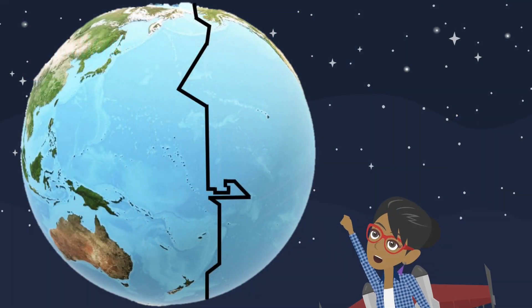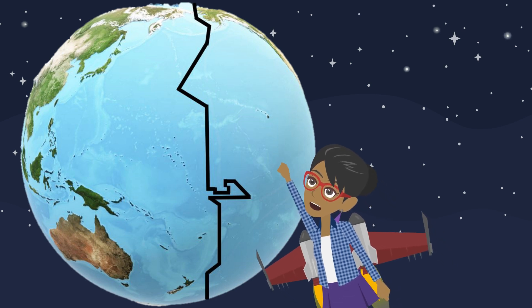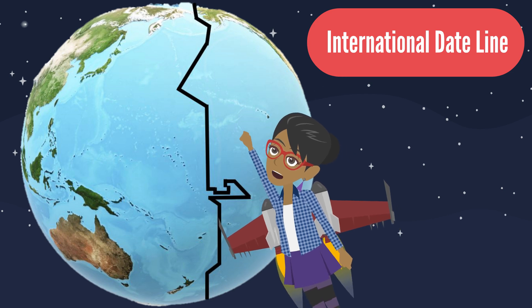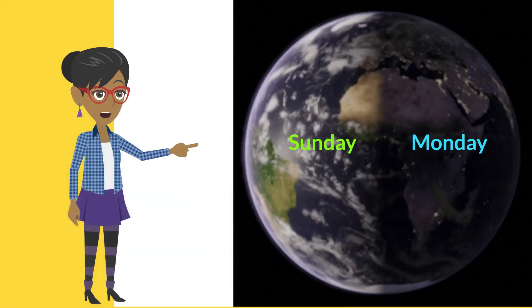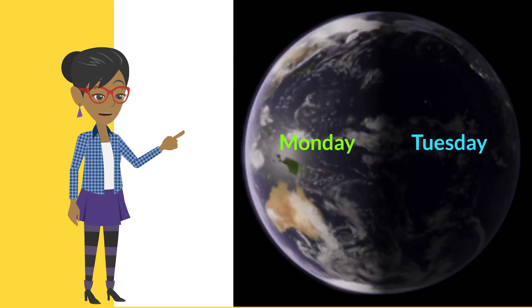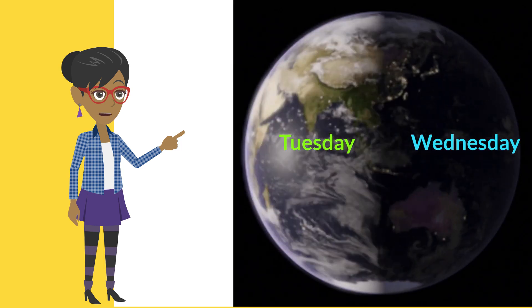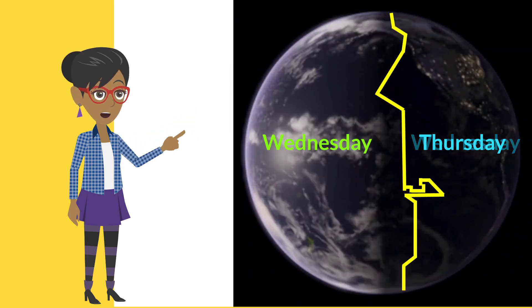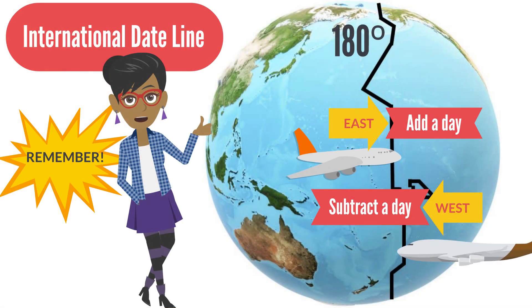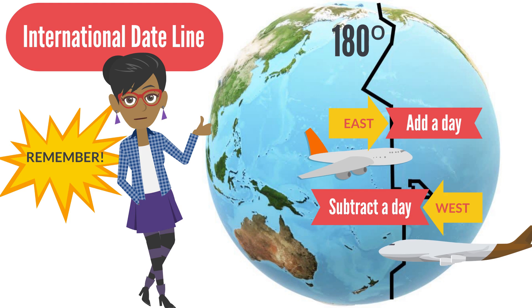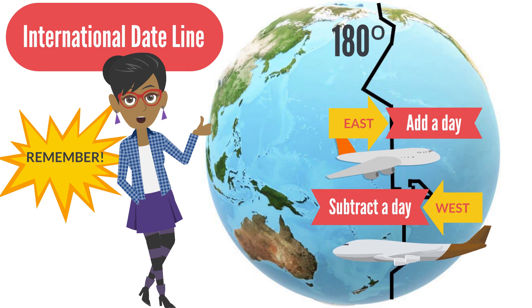Let us explore what happens when a new calendar day starts at the 180 degree line of longitude, called the international date line. As the Earth rotates on its axis, each time it reaches the 180 degrees line of longitude, a new calendar day begins, separating two calendar days. Remember that when you travel east and you cross the international date line, you add a day, and when you travel west and cross the international date line, you subtract a day.